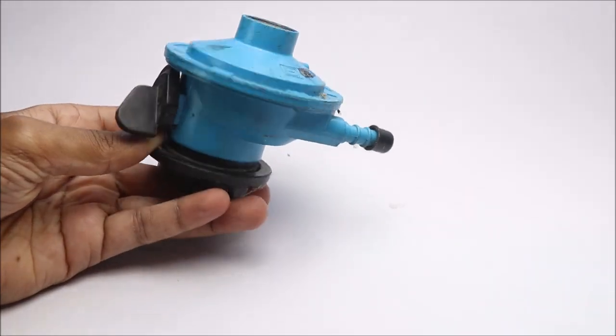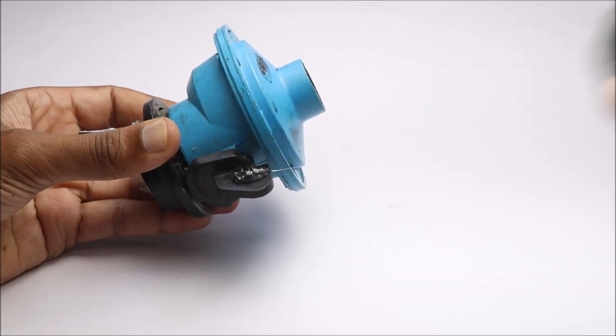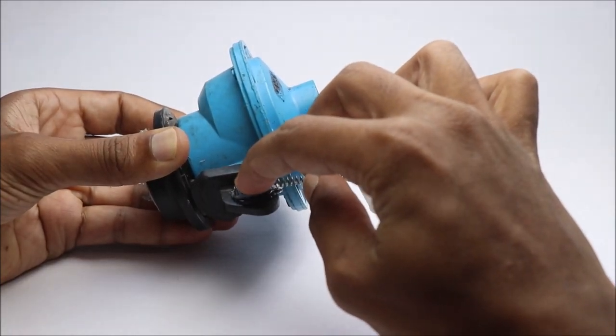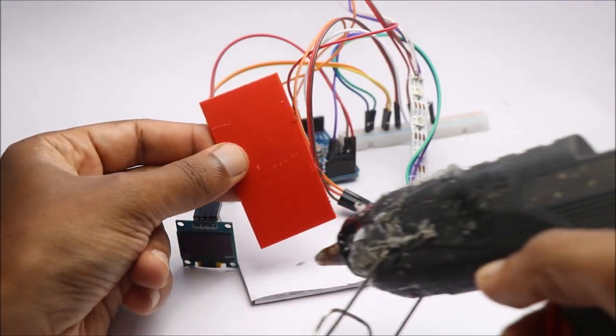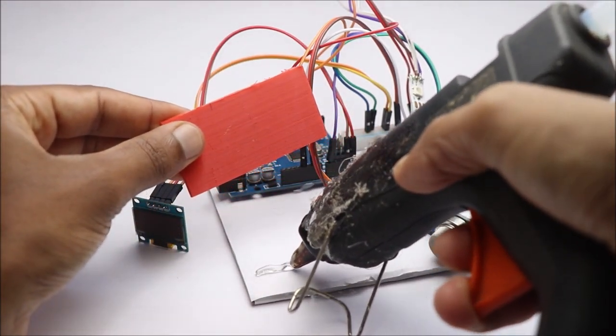To turn off the regulator I will use this small piece of spring scavenged from an old pen. Follow this step to set up all the electronics on this board.